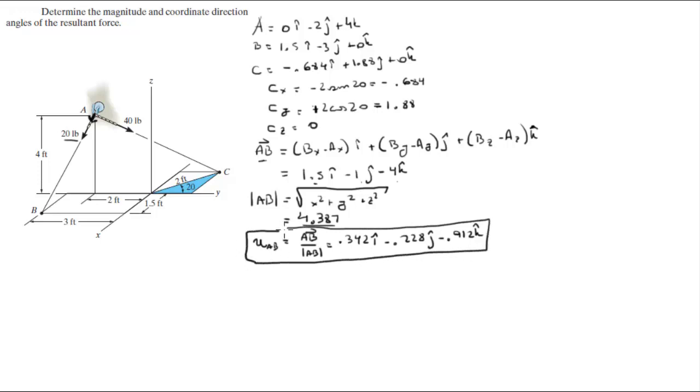Now that we have the unit vector, we can find the Cartesian vector form of this 20 pound force. I'm gonna call it force 1, and I'm gonna call this one force 2. The magnitude of F1 is given to me at 20 pounds, so the Cartesian vector form of F1 can be found by multiplying this magnitude by the unit vector AB, and this comes out to be 6.48i minus 4.56j minus 18.24k.